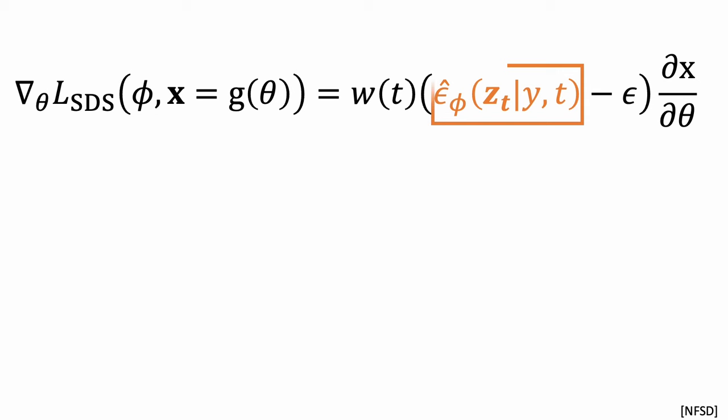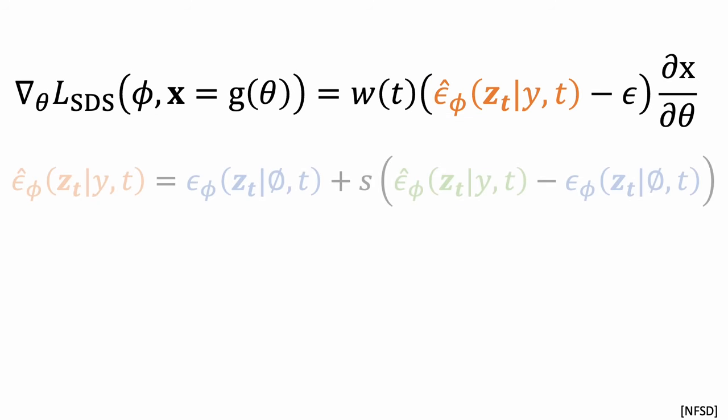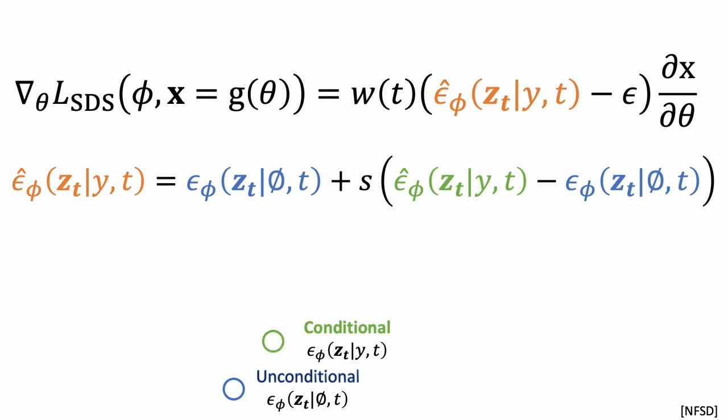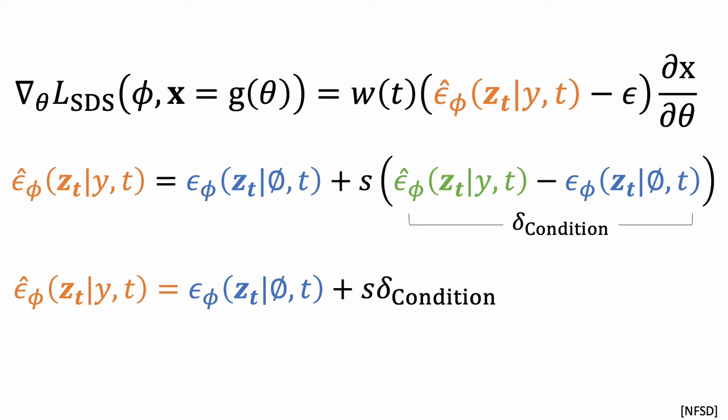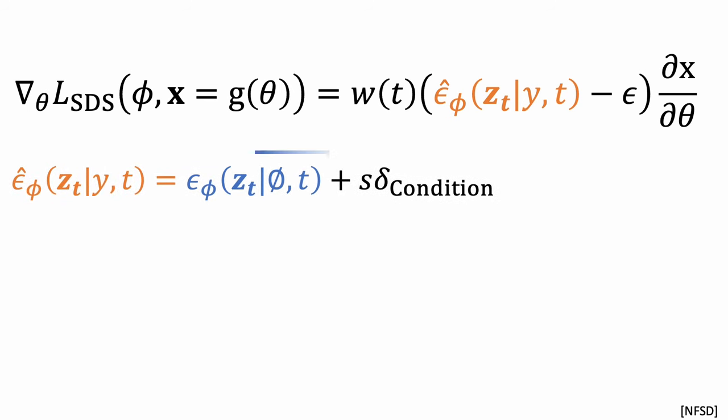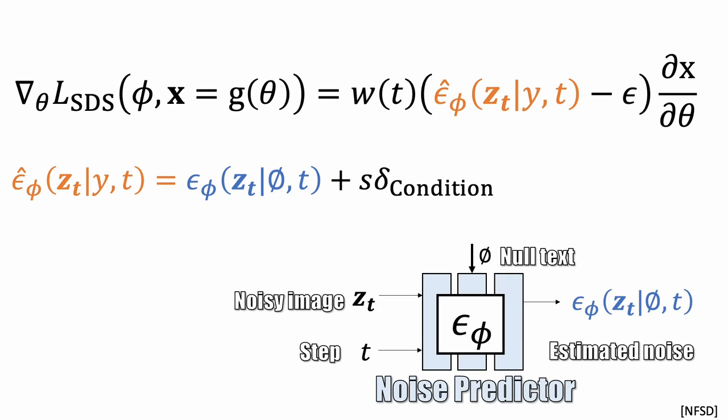First, here is the estimated noise with classifier-free guidance. This comes from taking the estimated noise from conditional and unconditional models and extrapolating away along this direction so that the generation will match your text prompt better. Let's call this direction delta-condition and simplify this equation. Now let's look at the estimated noise from the unconditional model. Here, the input noisy image z_t is constructed by this equation. However, during training, the clean image x comes from a dataset of real images.